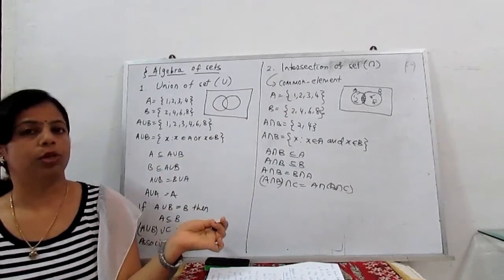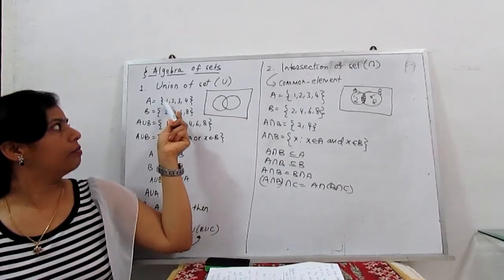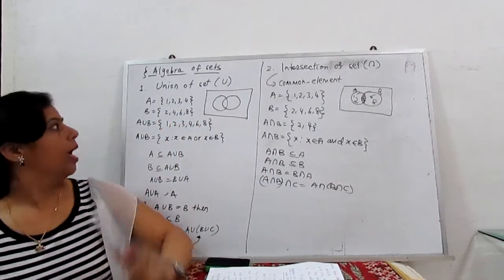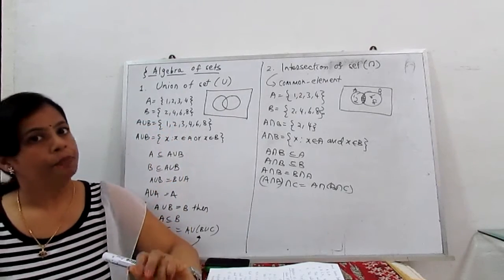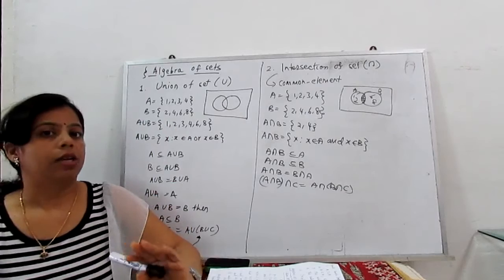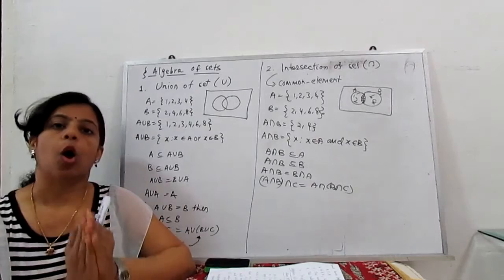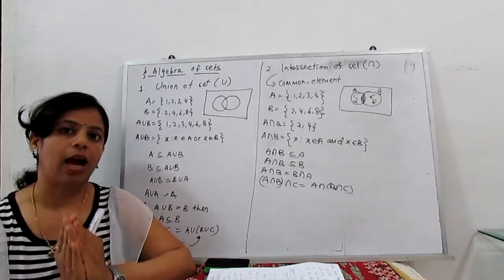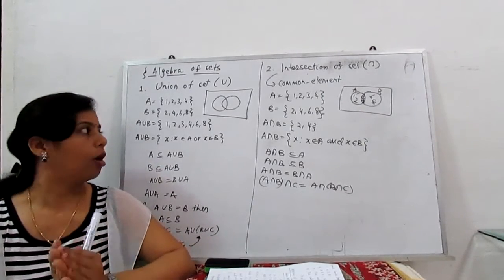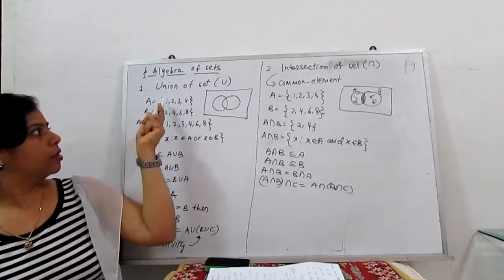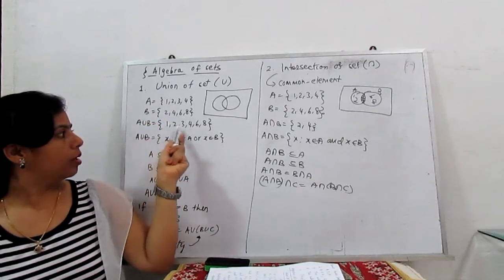First we learn union and then we move to intersection. If A is {1, 2, 3, 4} and our set B is {2, 4, 6, 8}, our task is to find A union B. A union B means the collection of all elements which are in A or either in B. So A union B is {1, 2, 3, 4, 6, 8}.